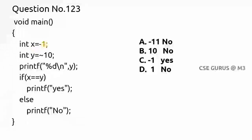So here x value is minus 1. What is y value? That is what is required here. If you know y value, our answer will be over. So y equals to tilde of 10. What is this tilde or negation?